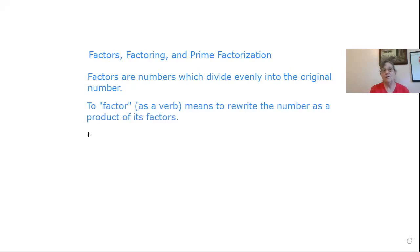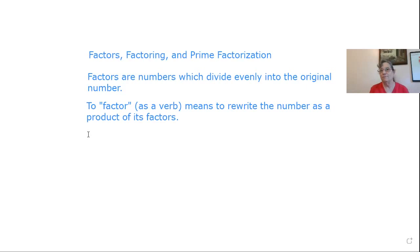Factor can either be a noun, such as when you are saying three is a factor of 12. Or factor can be a verb, an action verb, where you take a number and rewrite it as a product, which is the result you get from multiplying. So you rewrite the number as a multiplication problem.